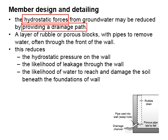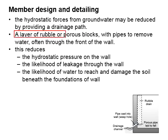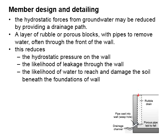These hydrostatic forces can be reduced by providing a drainage path to discharge the groundwater from the soil. This can be done by providing a layer of rubble or porous blocks. The rubble is provided here so that the groundwater can easily flow in and quickly be discharged through the weep hole to the drainage in front of the retaining wall.